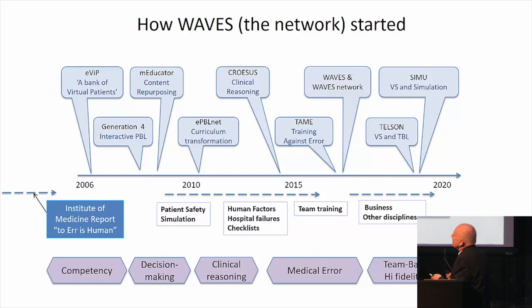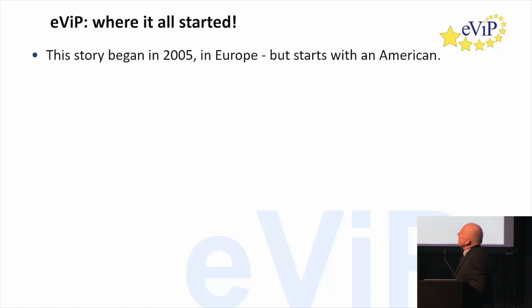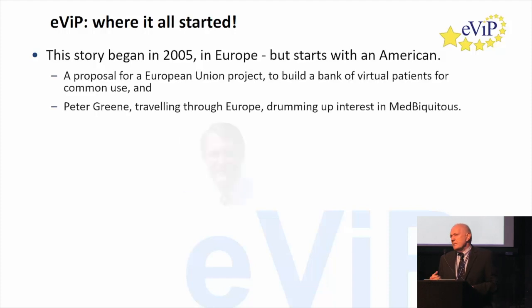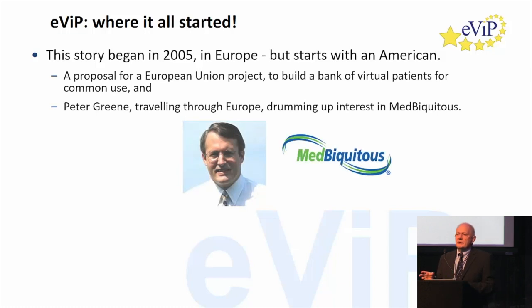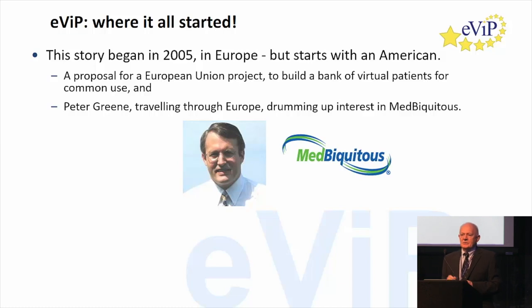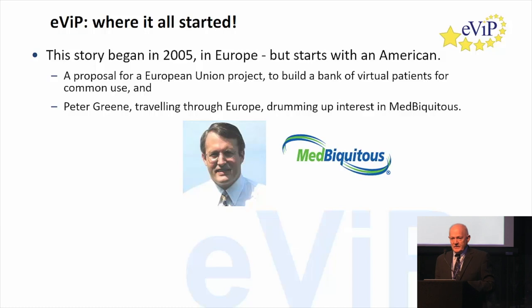What I want to do is pick out one or two projects to detail and show what features they produced on this timeline — EVIP, Generation 4, E-PBLnet, Cresis, and TAME. EVIP was where it all started. It began in 2005 in Europe. An American named Peter Green was running around Europe trying to drum up interest in a new venture — to build a global healthcare standards organization. He spent about six months on sabbatical doing this, and he persuaded me to persuade everybody else that it was worth adding a standard to the project. If we built a bank of virtual patients, these patients should be able to move from one virtual patient system to another. The partners found this hard to swallow because it was very expensive, but we agreed, and it obviously worked because we got the grant.